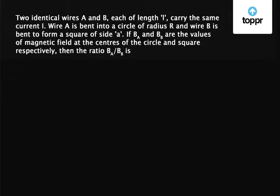Let us take a question on electromagnetism. Two identical wires A and B, each of length L, carry the same current I. Wire A is bent into a circle of radius R and wire B is bent to form a square of side A. If BA and BB are the values of magnetic field at the centers of the circle and square respectively, then the ratio BA upon BB is...